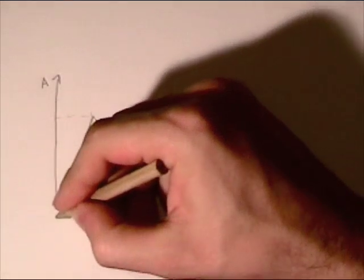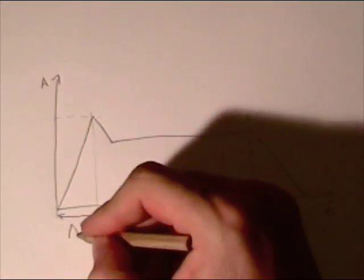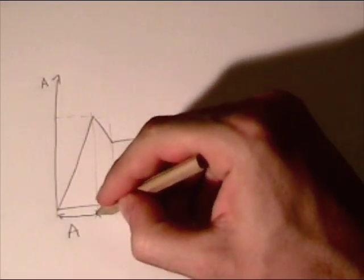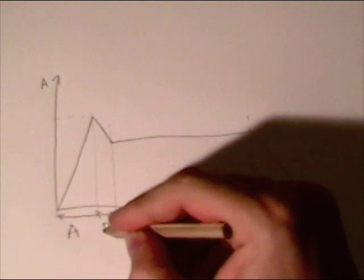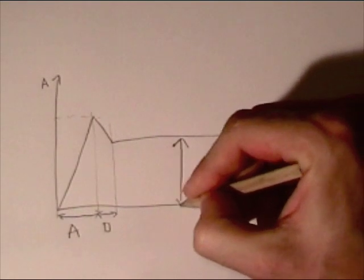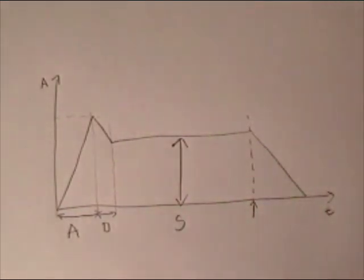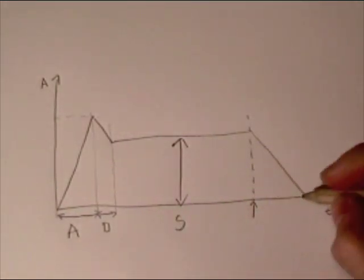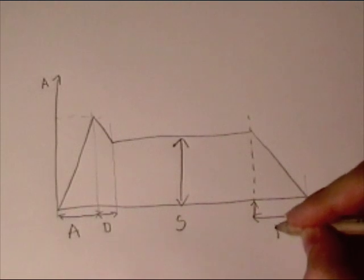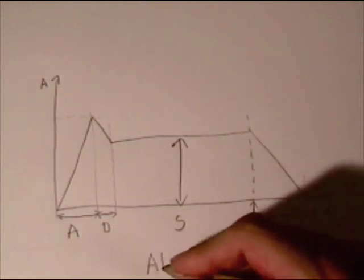The first stage is a time value for the attack time, called attack. The second is also a time value — the amount of time taken for the sound to decay from its loudest value down to the level at which it sustains, called decay. This level is called the sustain level, held continuously until the key is released. After which there is another time value called the release time. This four-stage envelope is known as the ADSR — attack, decay, sustain, and release envelope.